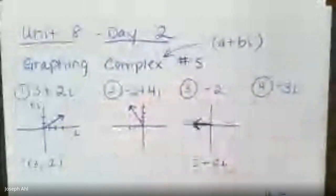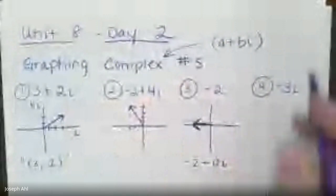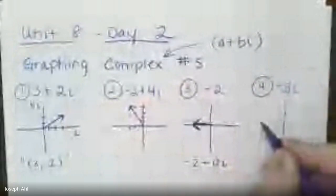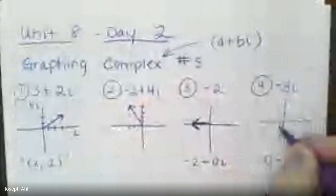And then finally, negative 3i. Similarly, if you have something that's purely imaginary, that's not going to go to the left or right at all. In this case, if we have 0 minus 3i, this just goes down 3 units on the imaginary axis, and you get something that looks like that.